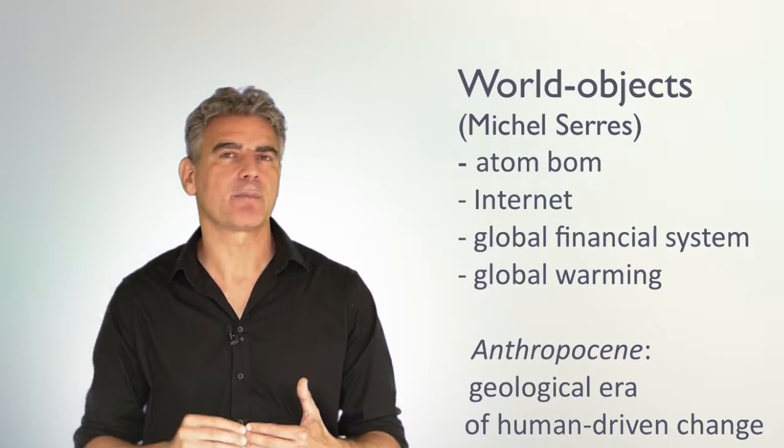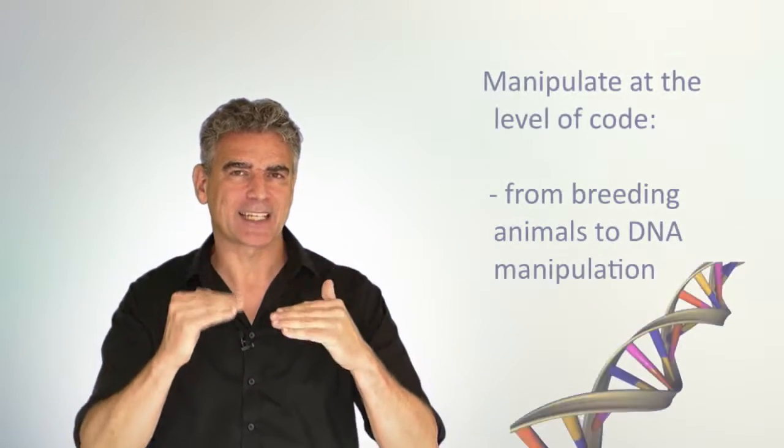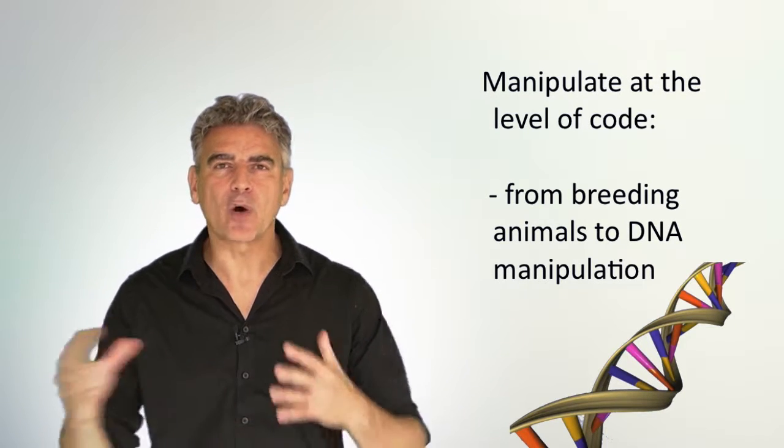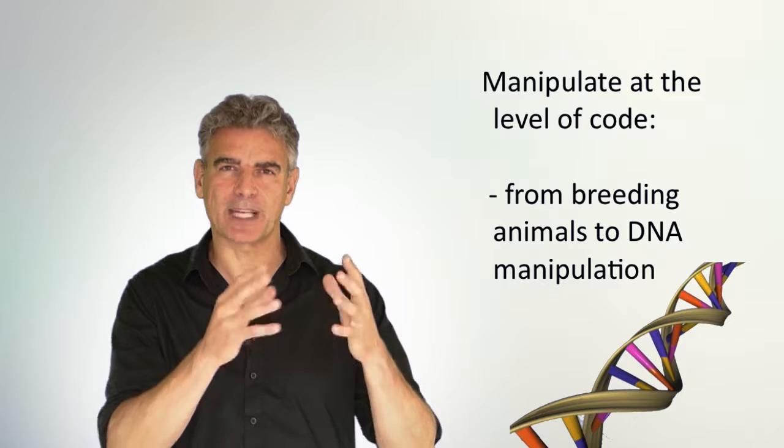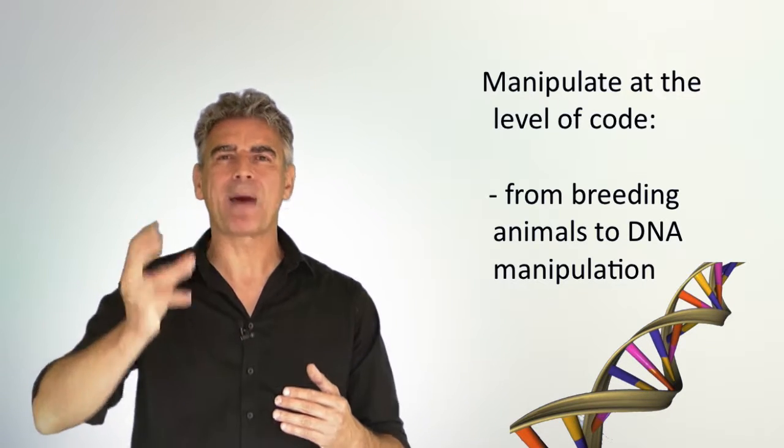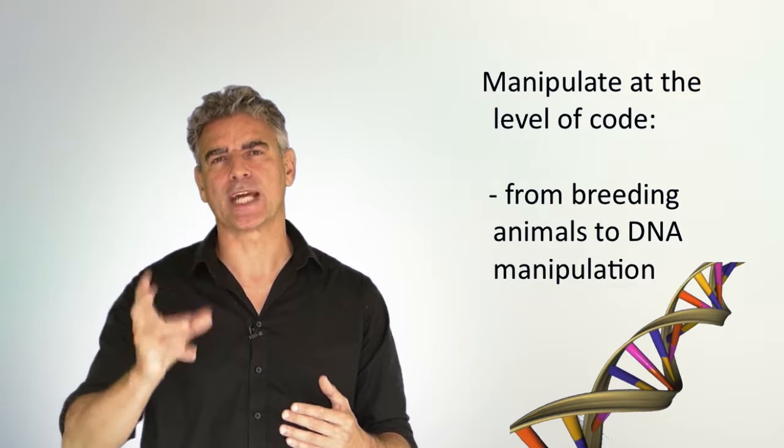The second one is that we've also become powerful on the level of manipulating at the level of code. In terms of agriculture, we've always crossed species and tried to make new species. But now we can do it by splicing genes. And that gives us a lot more power and a lot more capacity for creation.